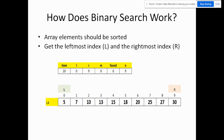So how does binary search work? The array elements should be sorted. We get the leftmost index, which is called l, and the rightmost index, which is called r. In this example, l is zero and r is nine.